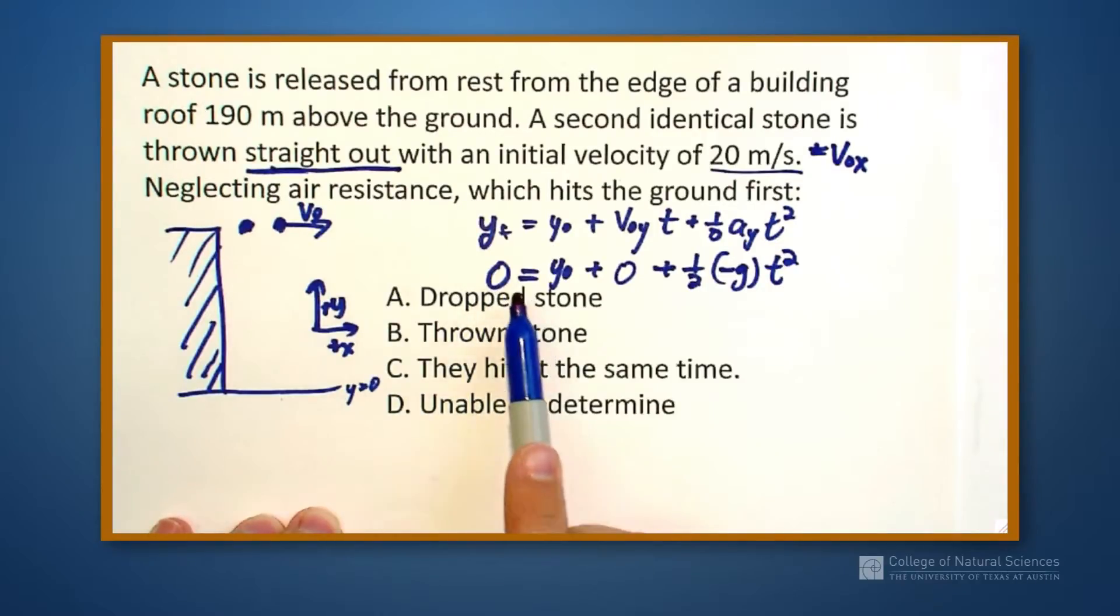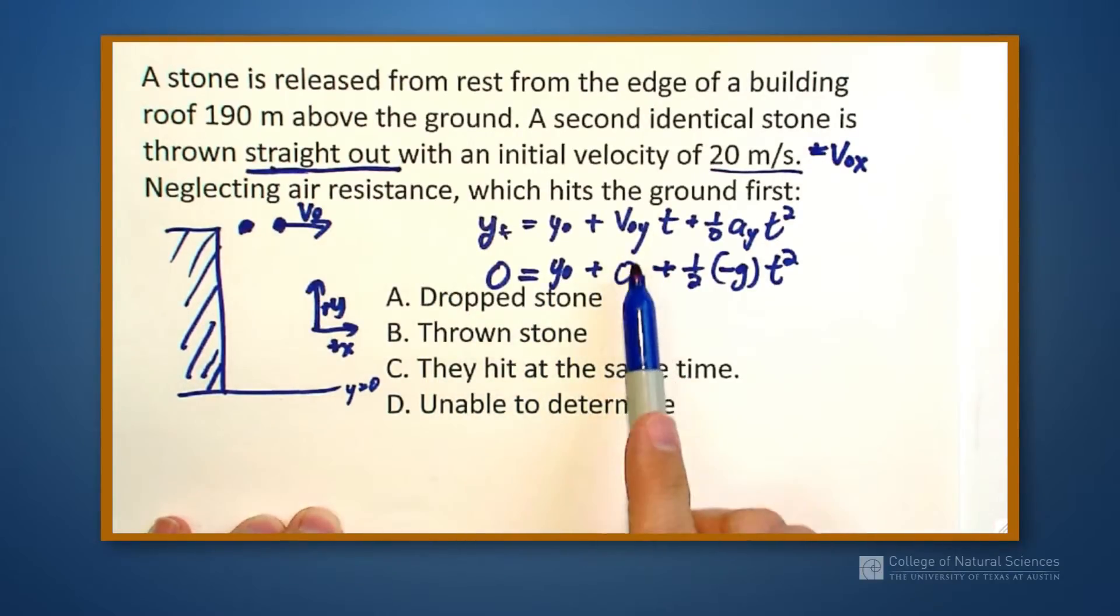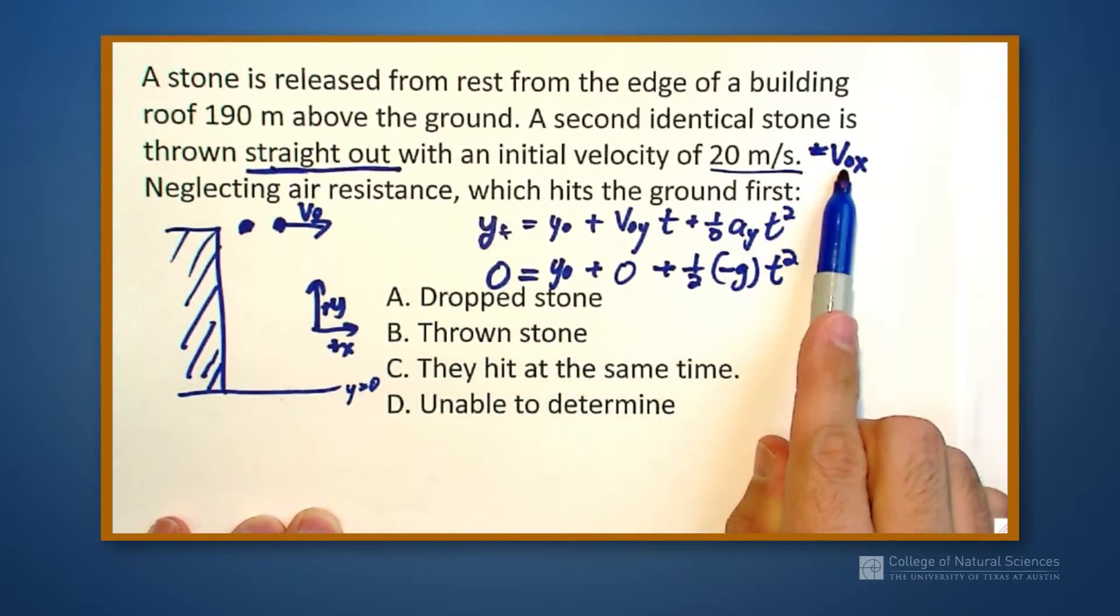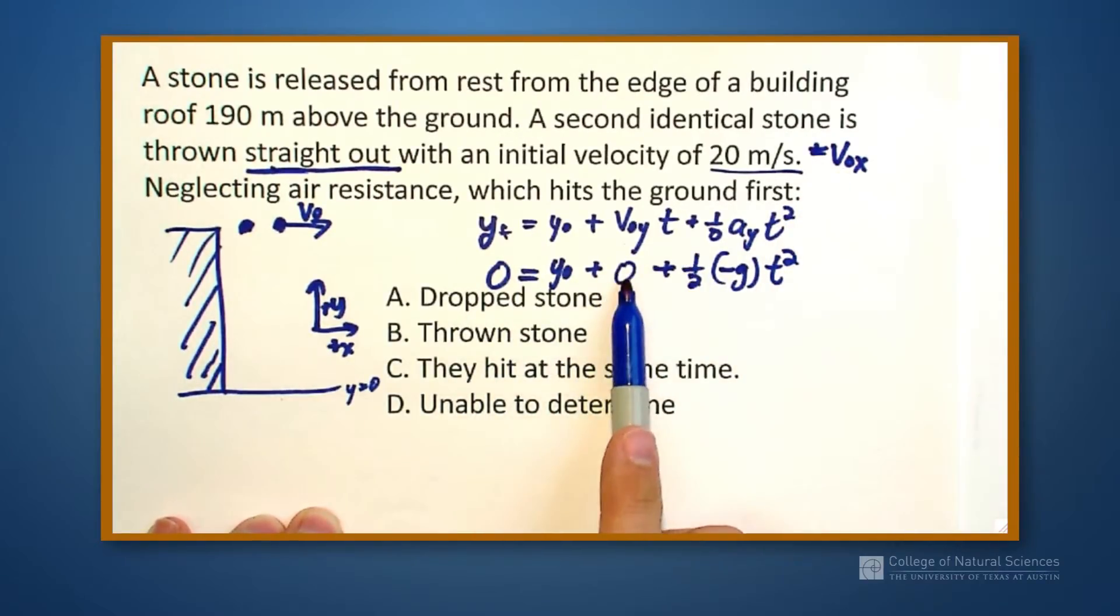When we look at this equation, it still lands at the ground. It still started at the 190 meters above. It still has an initial velocity in the vertical direction of zero. It has a horizontal direction, but that doesn't matter for this problem. It's in the vertical direction only, it's zero.